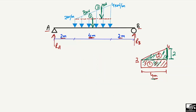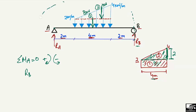Using the equilibrium equation: summation of moments at point A equals zero. We assume clockwise moment is positive and anticlockwise moment is negative. RB acts upward and creates an anticlockwise moment about A, so it is negative: minus RB times the total distance from B to A, which is 2 + 4 + 2 = 8 meters.